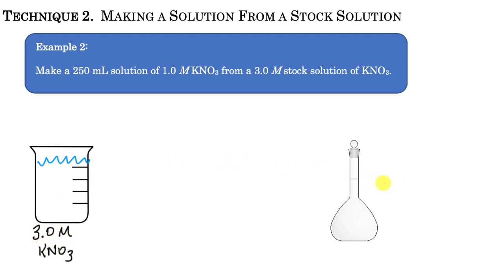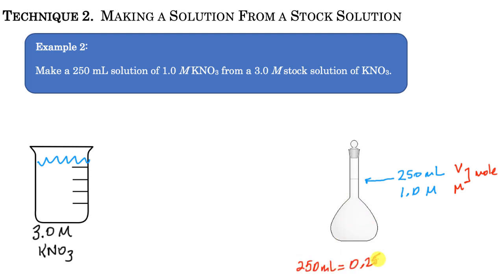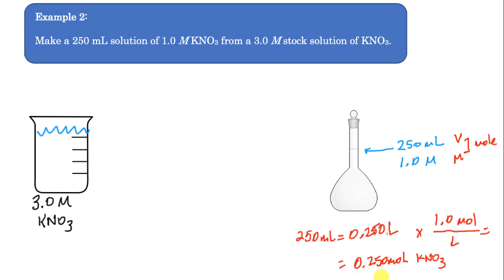We're going to use a 250 mL flask and dilute the concentration down to 1 molar. To do this, I again focus on moles. I have a desired volume and molarity, so I can calculate the moles needed. That gives me 0.25 moles of potassium nitrate that need to be in the final solution.